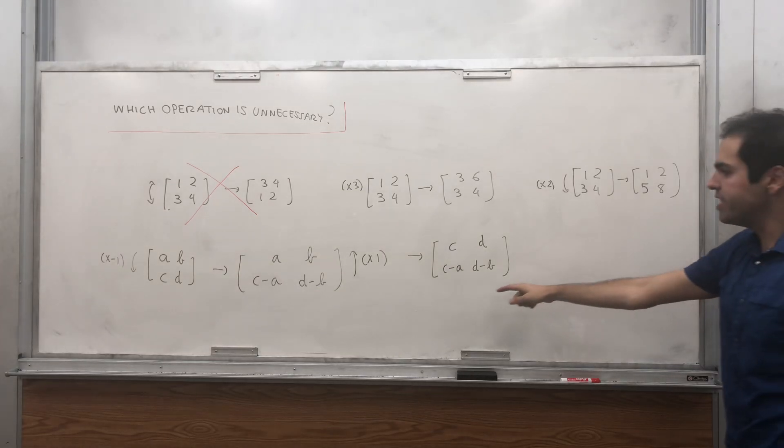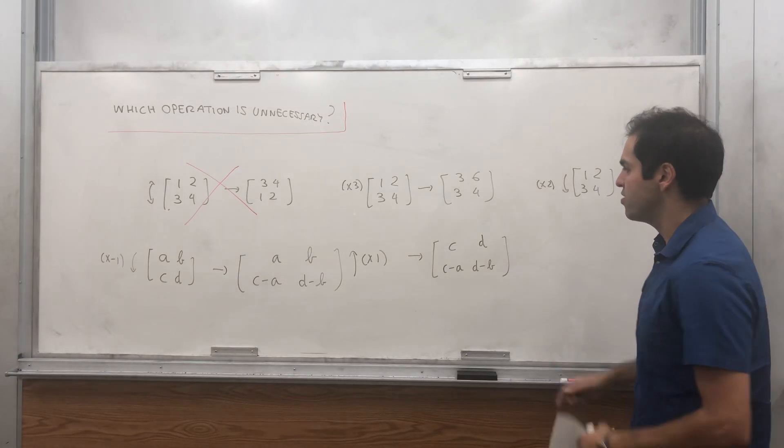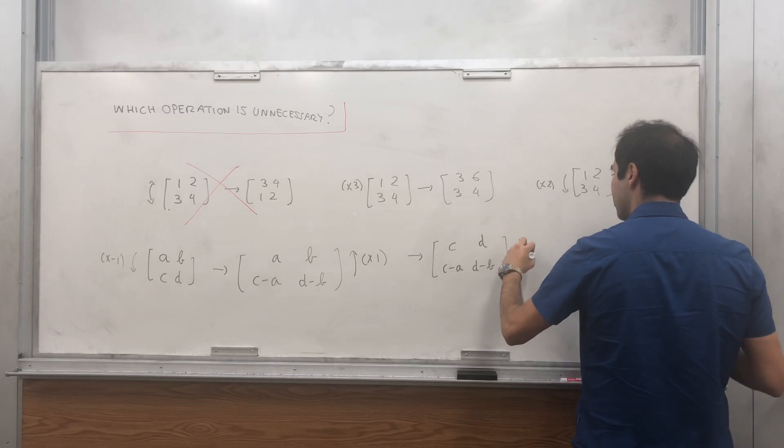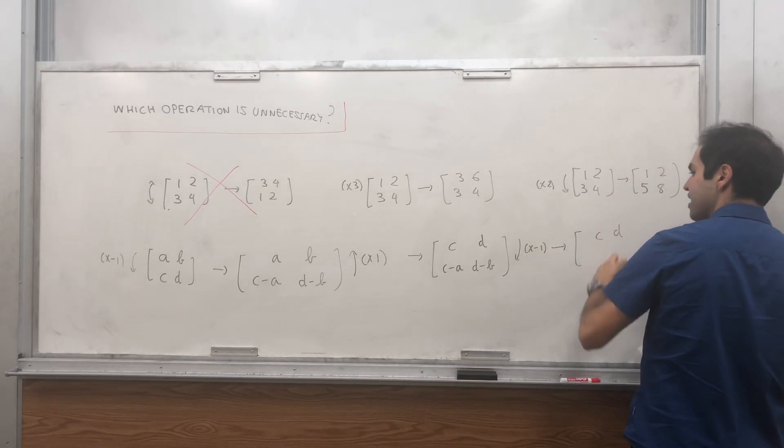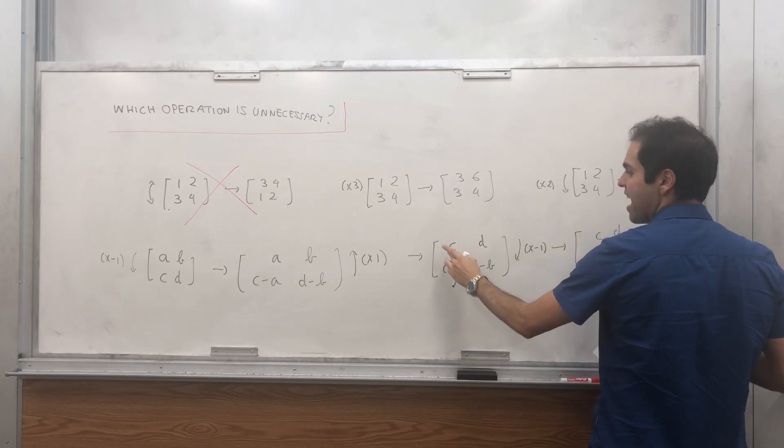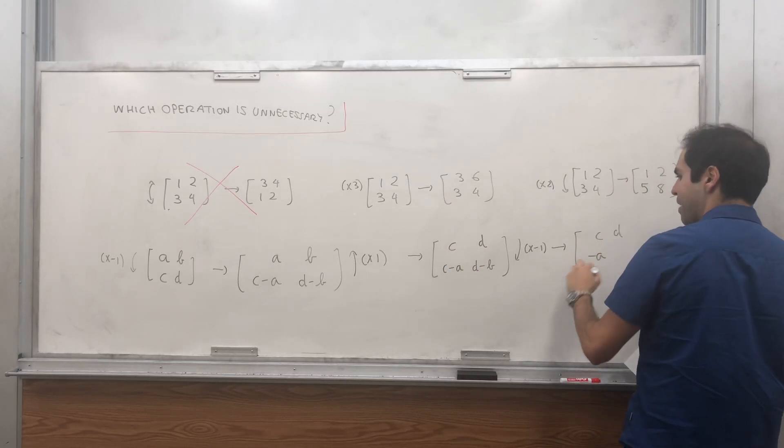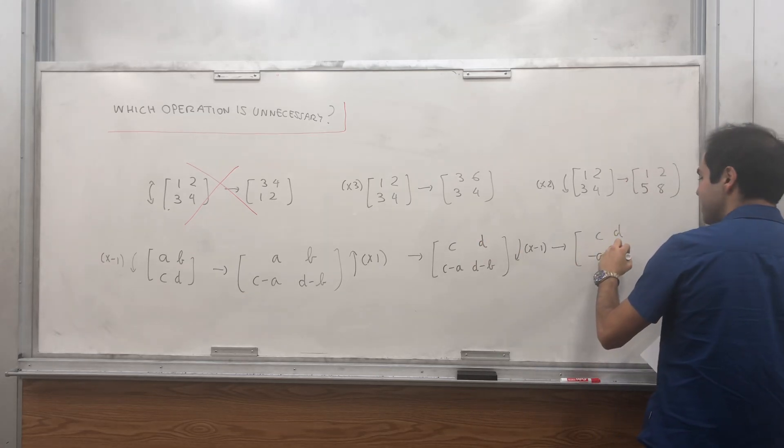Lastly, ideally, we would like to have A and B, so subtract this row from this row. So times minus one to get CD, and then C minus A minus C, which is minus A, D minus B minus D, which is minus B.